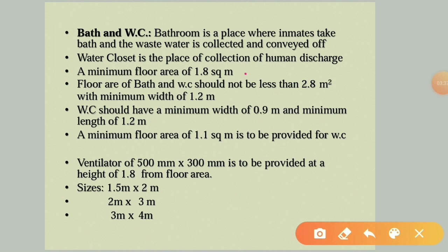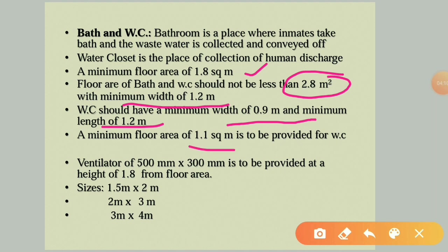The bathroom is where people bathe and wastewater is collected, and the water closet is for collection of human discharge. The minimum floor area is 1.8 sq.m, combined bath and WC area should not be less than 2.8 sq.m, and minimum width is 1.2 meters. Water closet minimum dimensions are 0.9m width and 1.2m length, giving a minimum floor area of 1.1 sq.m. Ventilators of 500mm×300mm are provided at a height of 1.8m from the floor.